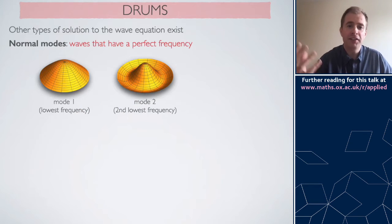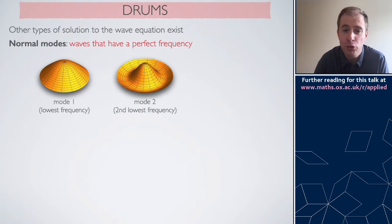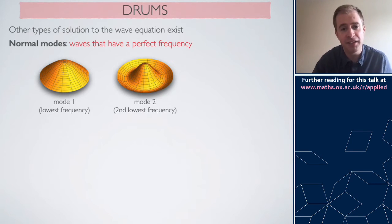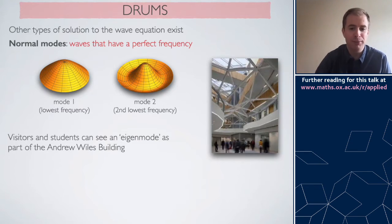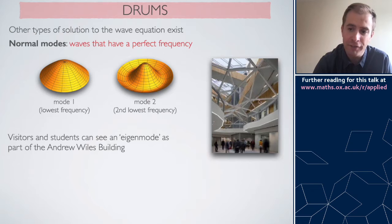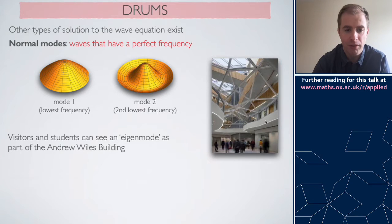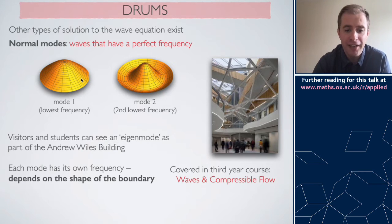There are other solutions of the wave equation as well. A very common one is what's called a normal mode — think of what happens when you hit a drum. You set the skin vibrating at a particular frequency, and the drum skin must satisfy a particular shape. There are different modes with different shapes that the drum skin can adopt, and each of those different modes has a different frequency. Outside some of the lecture rooms in the Andrew Wiles building at Oxford, you'll see a big glass roof whose surface is designed to look like an eigenmode of the wave equation for that particular boundary.